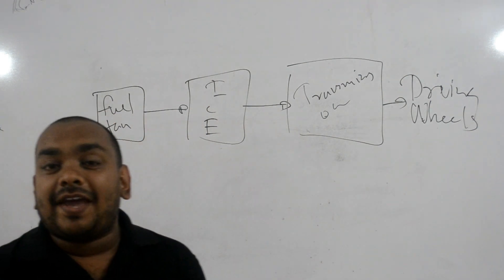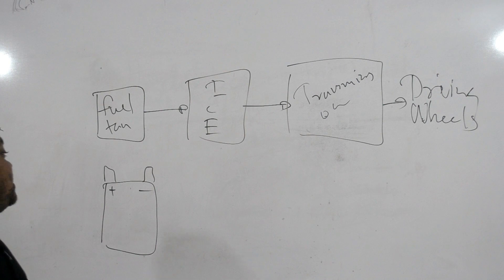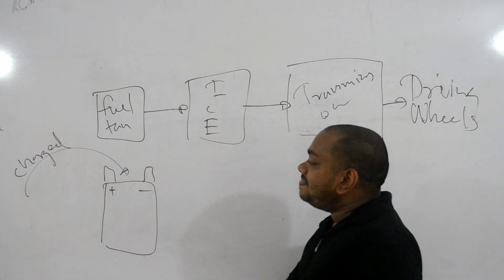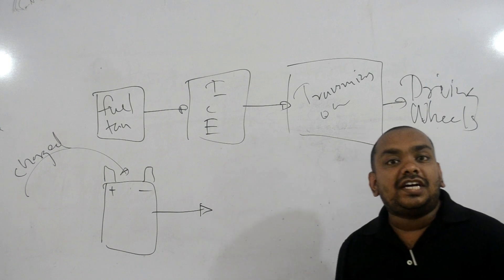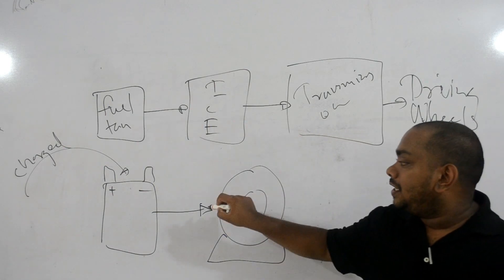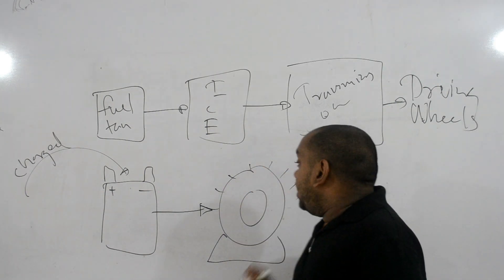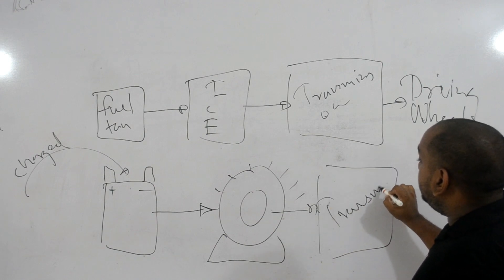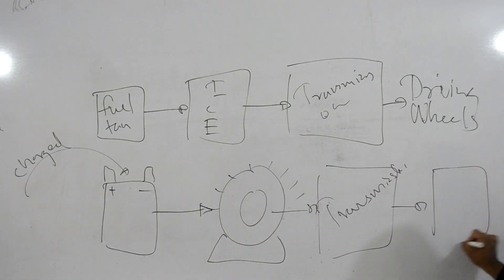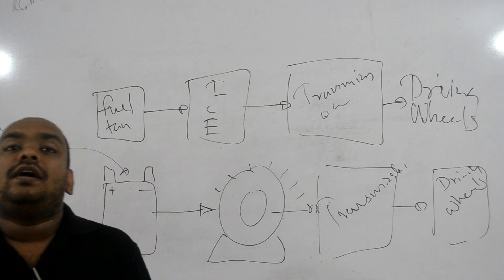In an electric vehicle, we have a battery which is charged by domestic electricity. We convert this electric energy to kinetic energy by using a motor. That motor goes to a transmission — remember, this transmission has a fixed gear ratio — and then that torque transfers to the driving wheels. This is the basic concept of an electric vehicle.